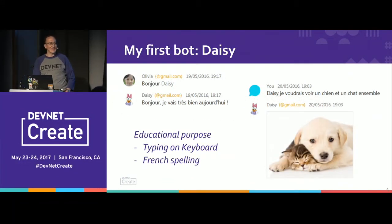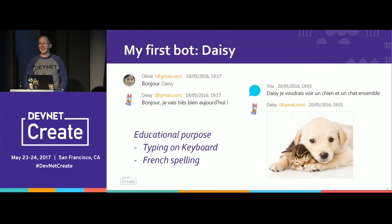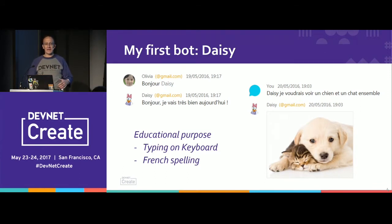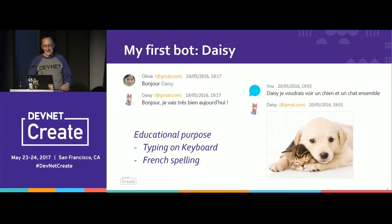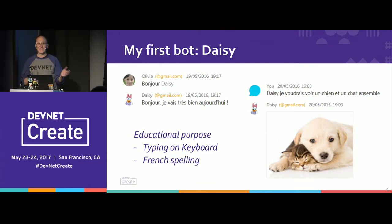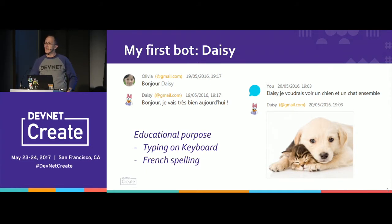Let's talk about how I started with bots. This is my first bot with Cisco Spark — it was Daisy. I named it for my kid; she was six years old at that time. If you're six years old, you know how to write your name but you don't know about spelling, how to interact with the user interface, or how to work with the keyboard. I just created a bot that was engaging for my daughter. She was asking for: I want to see a dog, I want to see a cute cat, I want to see a cute cat and a cute dog together.